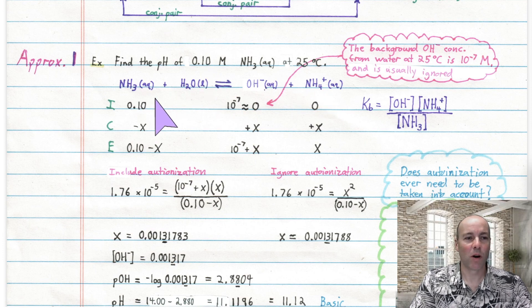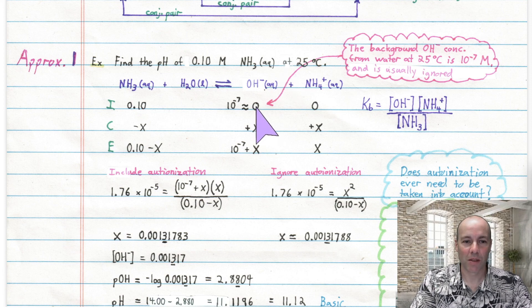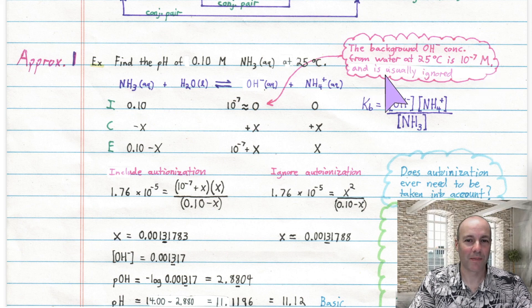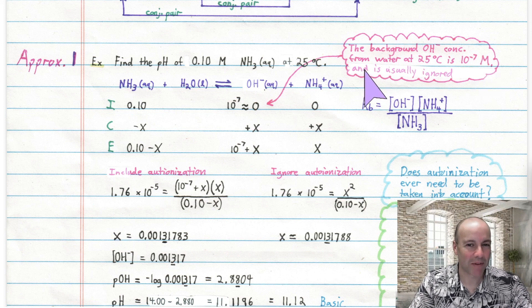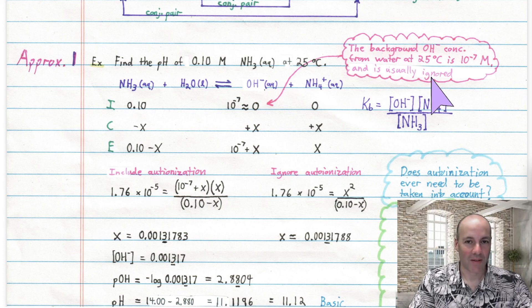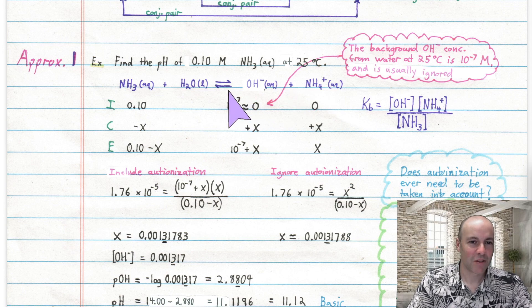If you begin with 0.1 molarity of ammonia, and no hydroxide or ammonium initially, we say those are zero. You should acknowledge that water does provide a background hydroxide concentration of 10⁻⁷ molarity — a tiny amount that can usually be ignored. We're going to take it into account this time to see if it really could have been ignored. So let's keep that 10⁻⁷ molarity there — that's what water provides at the beginning.